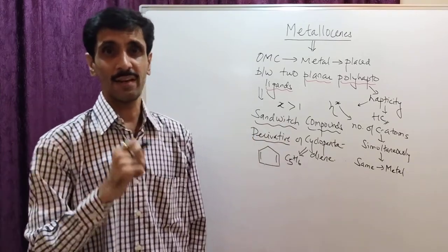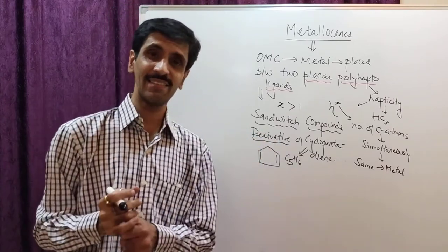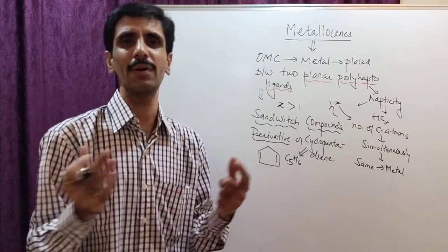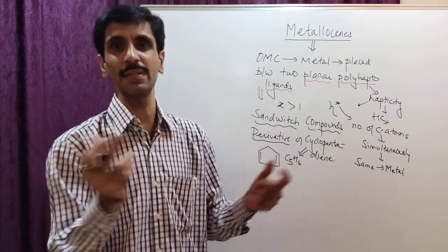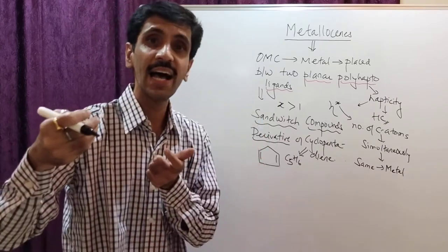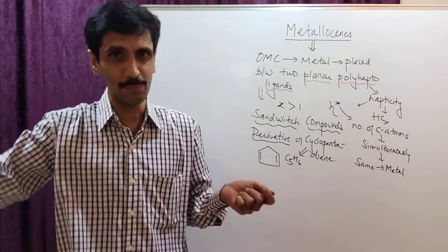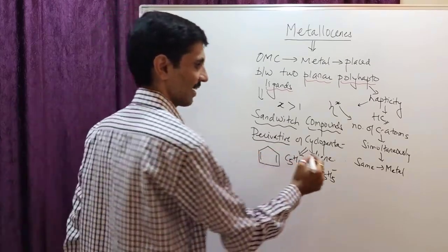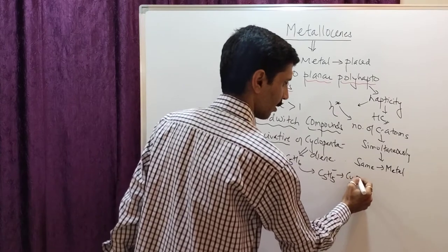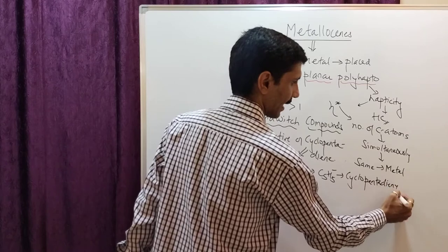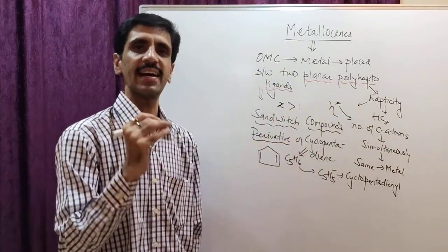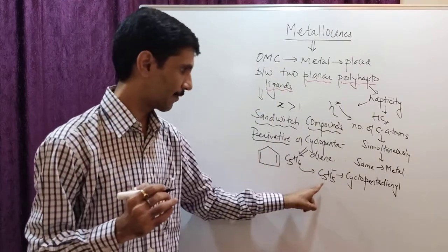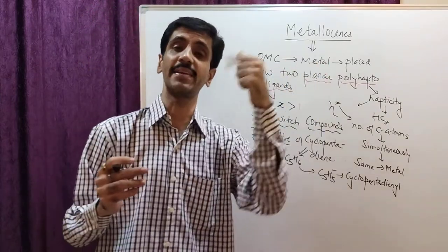Cyclopentadiene itself is not the poly-hapto ligand — it's a derivative that is used. To get the derivative, we remove an acidic hydrogen from the apical carbon. This gives C5H5 minus, which is called cyclopentadienyl. So we have two cyclopentadienyl ligands — C5H5 minus and C5H5 minus — and in between them is the metal.